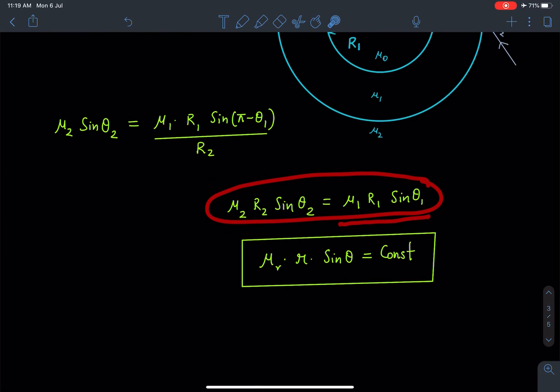From here I can conclude that Snell's law for radial variation can be written as μ at radius r times r times sin θ equals constant, instead of μ sin θ equals constant. We will be using Snell's law in this form: μ·r·sin θ equals constant.